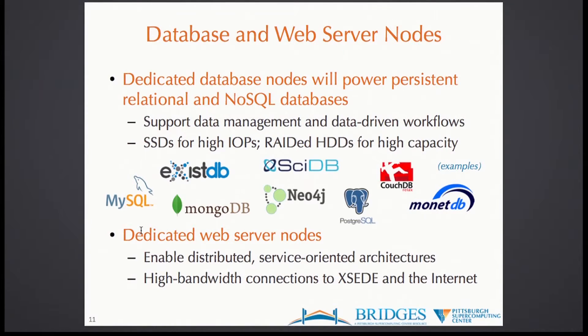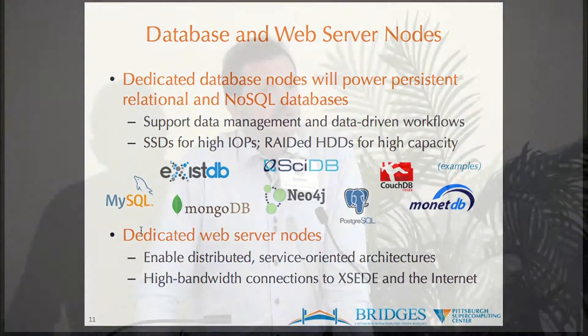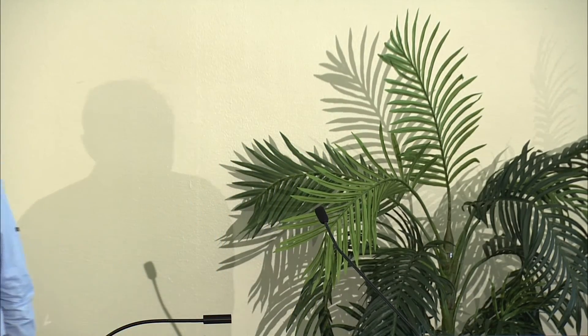We've been presenting this to a number of groups who are very interested. Examples of applications include the Pittsburgh Genome Resource Repository, which currently contains about one petabyte of Cancer Genome Atlas data, and a Center for Causal Discovery, which is an NIH Big Data Knowledge Center of Excellence. See me outside at poster 3W. Thank you.